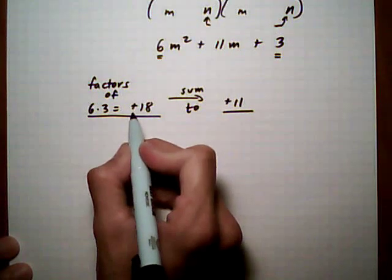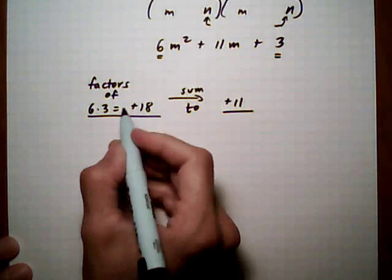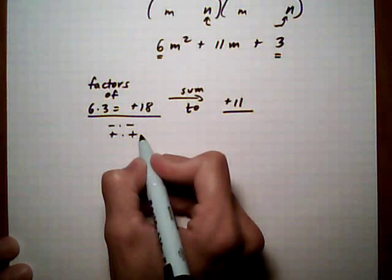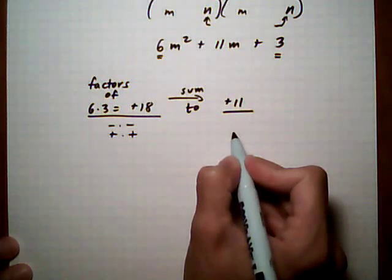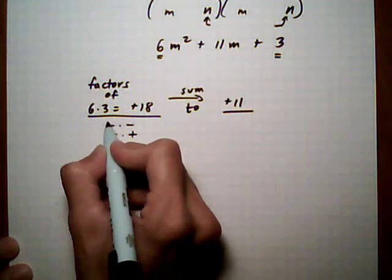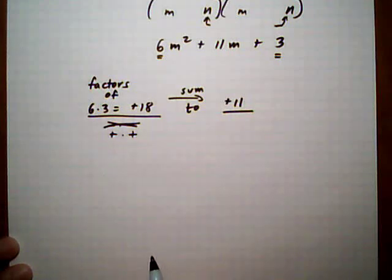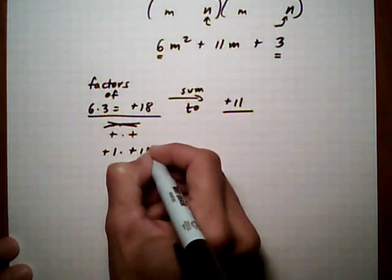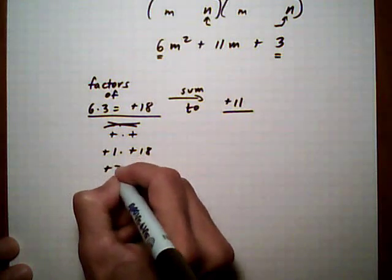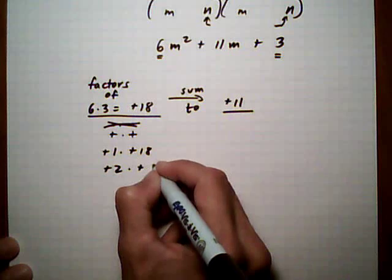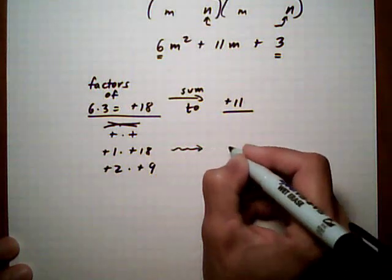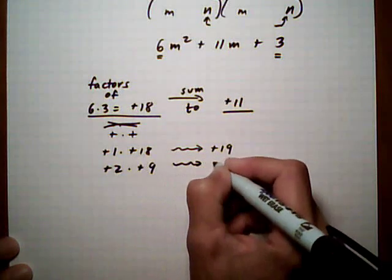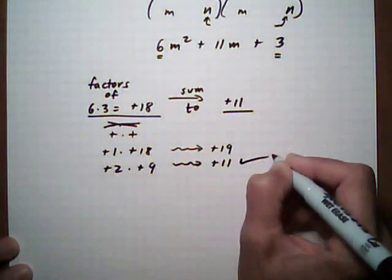So because we're looking at factors of positive 18, we're either going to have minus minus or plus plus factors. Because those factors have to add up to a positive number, we're going to look for plus plus. We do not want minus minus. So let's start listing them out. We have plus 1 times plus 18, plus 2 times plus 9, and all the time be thinking about what they add up to. That adds up to plus 19, that adds up to plus 11, and that one works.